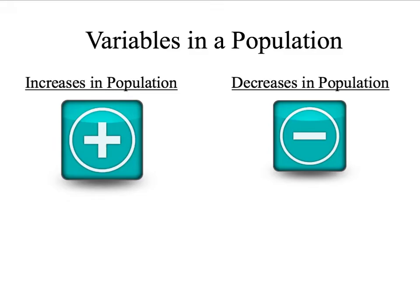So what can change a population? What makes a population go up or down? The first category is increases in populations. There are two things that can make a population go up. The first is births — anything that causes more organisms to be born or to germinate would increase the population. The other thing that can increase a population is immigration: organisms moving from one habitat into another population.